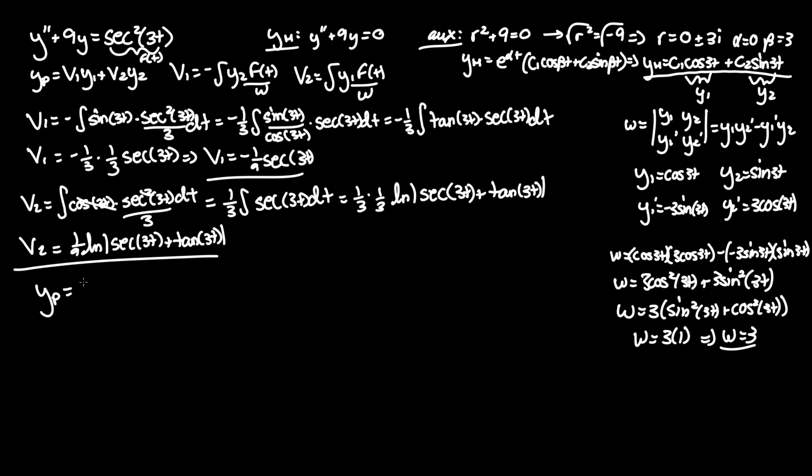Looking back at our y-particular solution, where it's v1 y1 plus v2 y2, now we just plug in our v1 y1s. Negative one ninth secant of 3t times the y1, which we said was cosine of 3t, plus v2, this whole term, y2, which was sine of 3t.